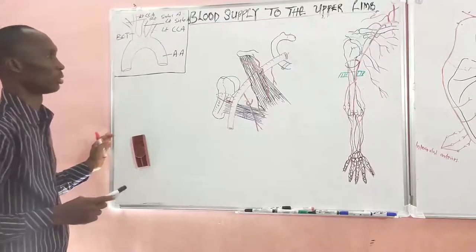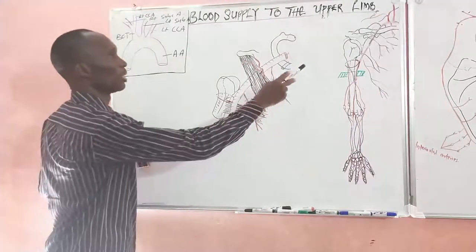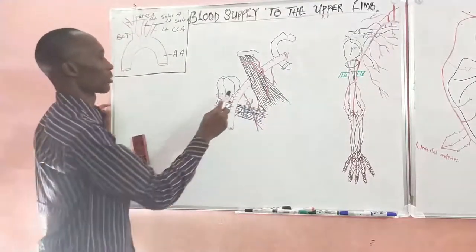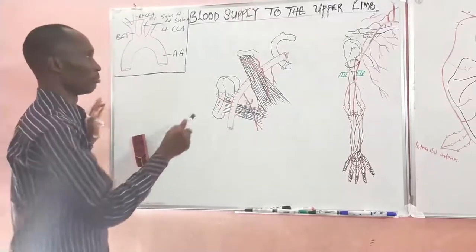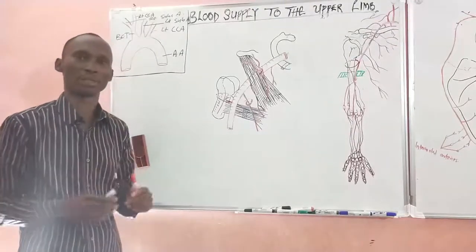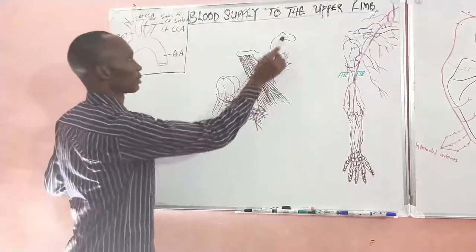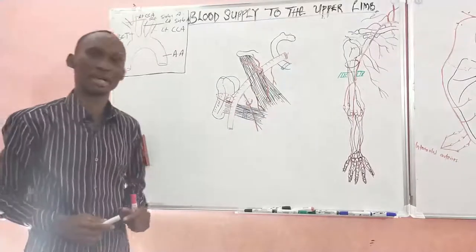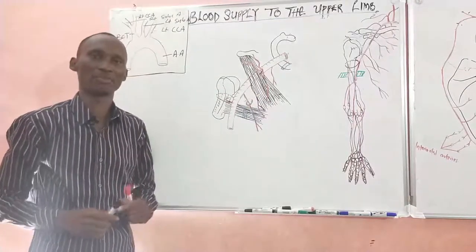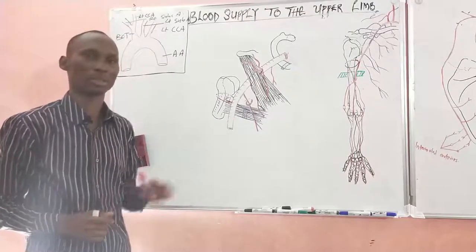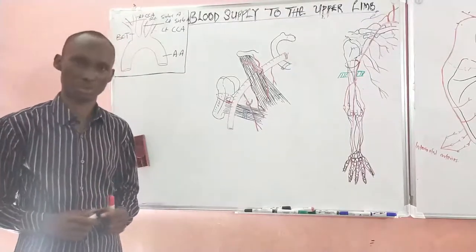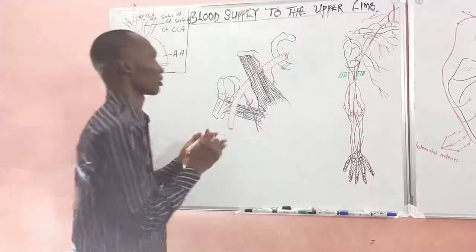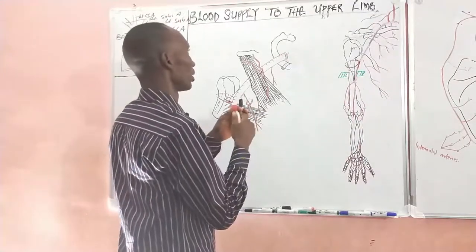The subclavian artery arches over the apex of the lung and then runs to the axilla by passing across the first digitation of serratus anterior, behind the clavicle at the midpoint of the clavicle. At the point where it passes through the outer border of the first rib, it loses its name and bears the name the axillary artery. The subclavian artery is divided into three unequal parts because it runs deep to a muscle called the scalenus anterior, which divides it into the first, second, and third parts.